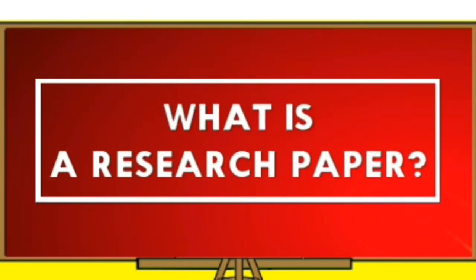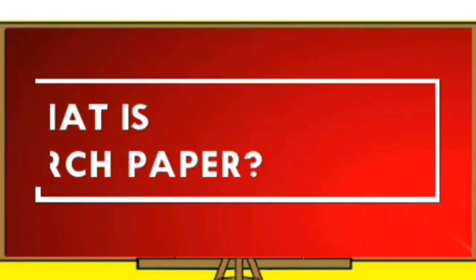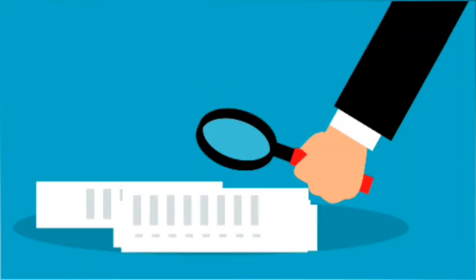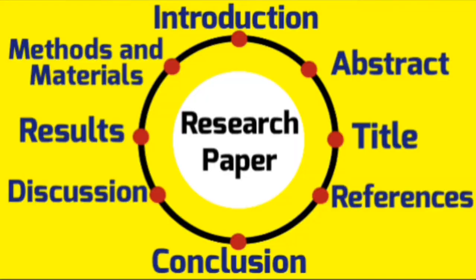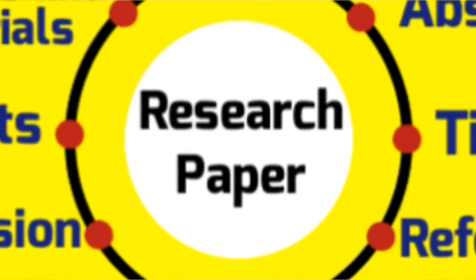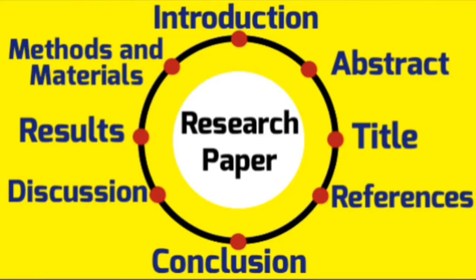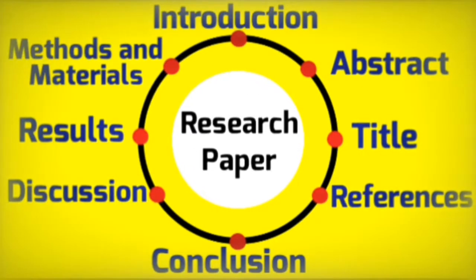What is a research paper? A research paper is a scientific article published in a peer-reviewed journal after being subject to review and scrutiny by academics specialized in the same field of the research paper. It aims to publish a new scientific study on a specific point so that other scholars and interested people can see it.